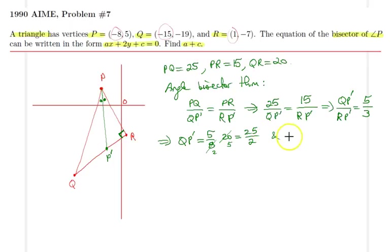And similarly, RP prime is therefore just the remaining, which is 15 over 2.